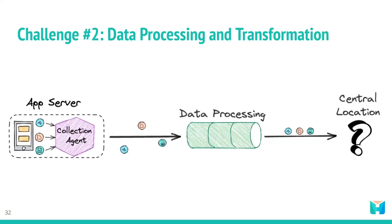The second challenge that needs to be solved to achieve observability is data processing and transformation. This component of the pipeline must be capable of processing data for particular analysis and transforming the data into a format that is accepted by the data storage component.